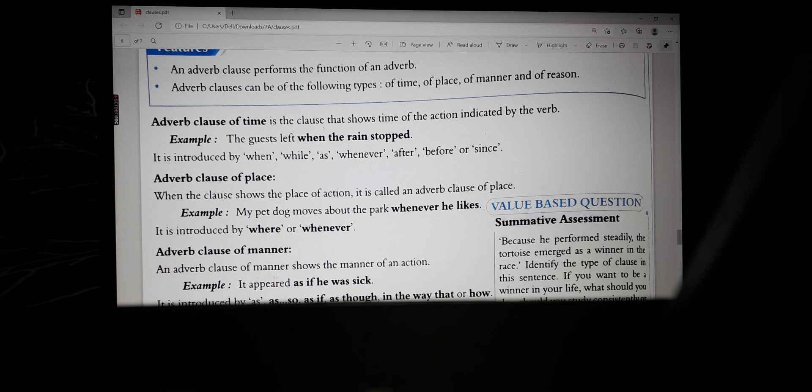Let us see certain examples now. Adverb clause of time is the clause that shows time of the action indicated by the verb. Example: the guest left when the rain stopped. So when did the guest leave? Well, after the rain had stopped, or just the moment when the rain stopped.